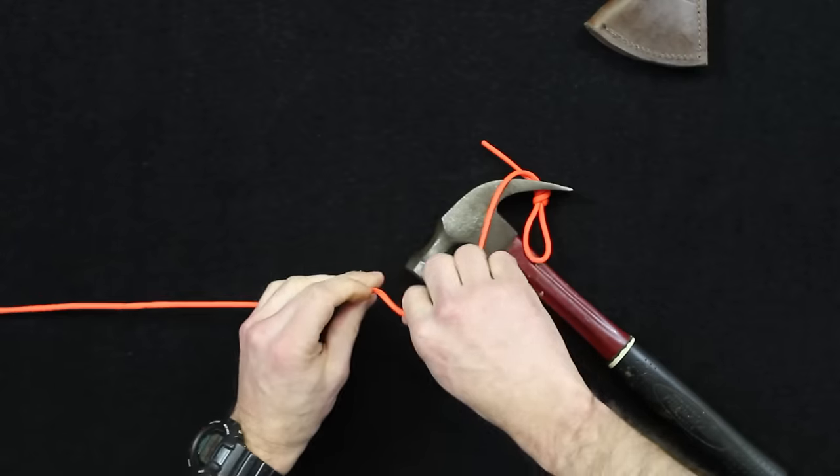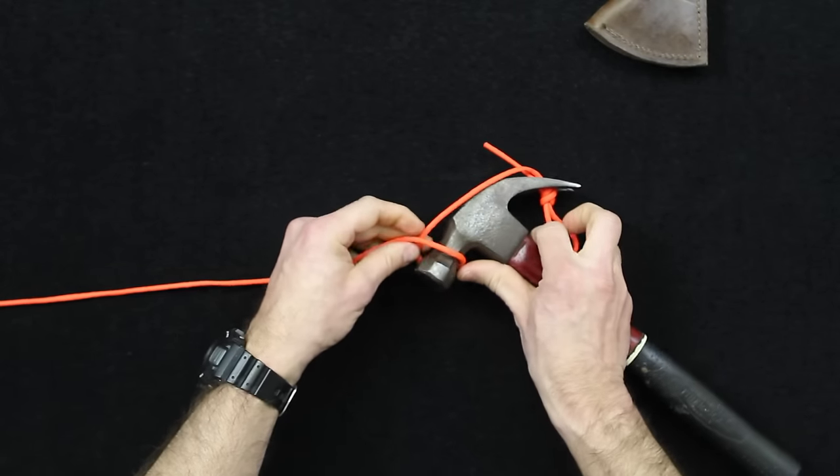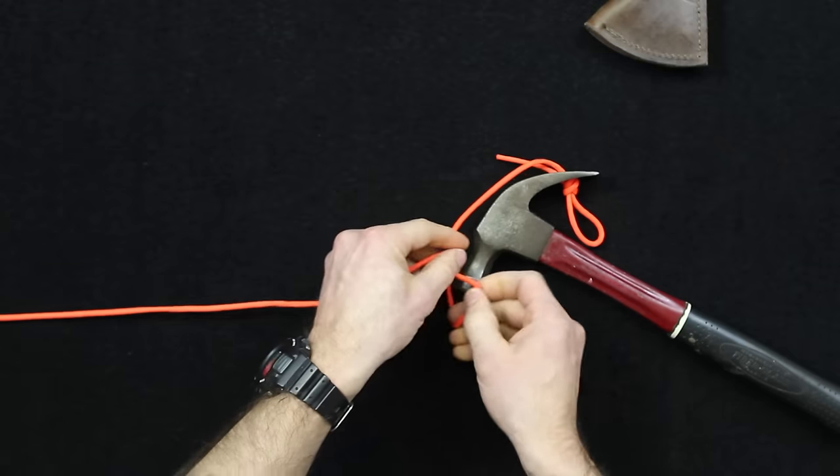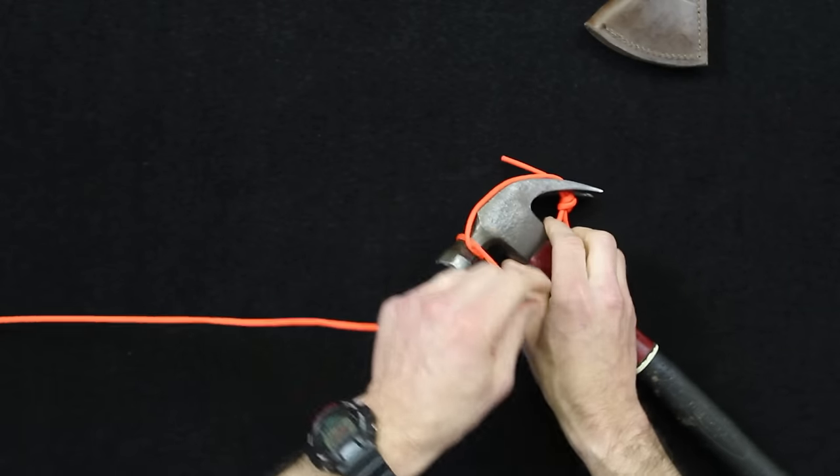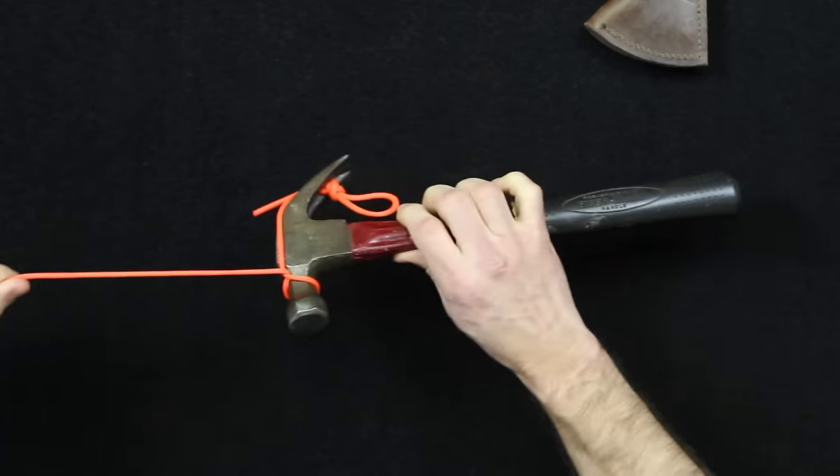And then all you're going to do now is simply twist a loop like that and tie it the right way. And that's what stabilizes the hammer as you're raising it up.